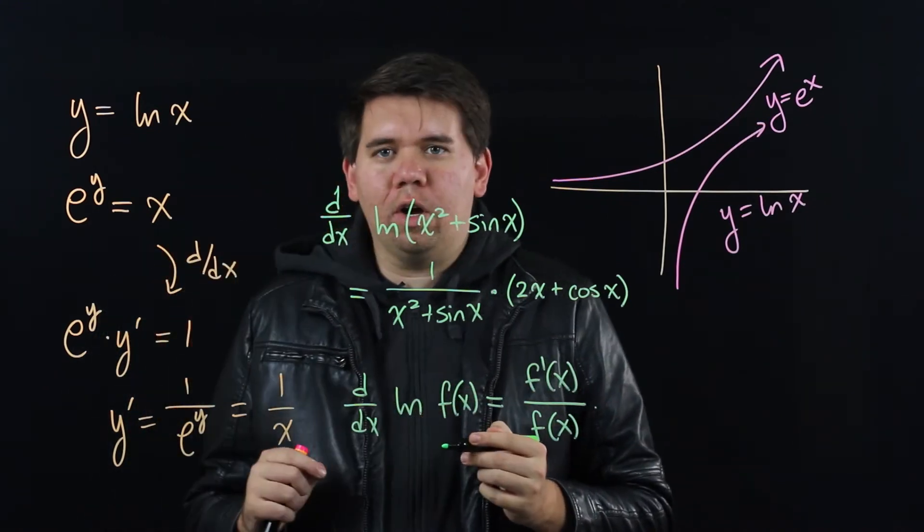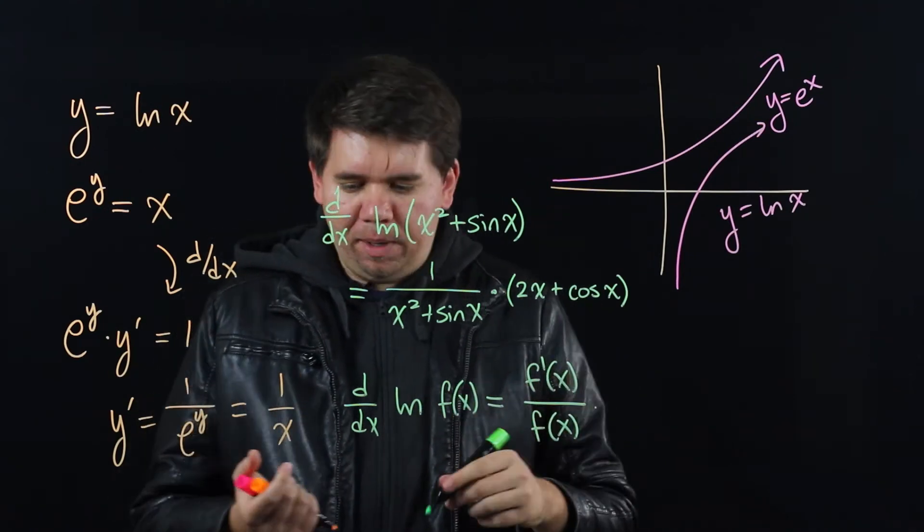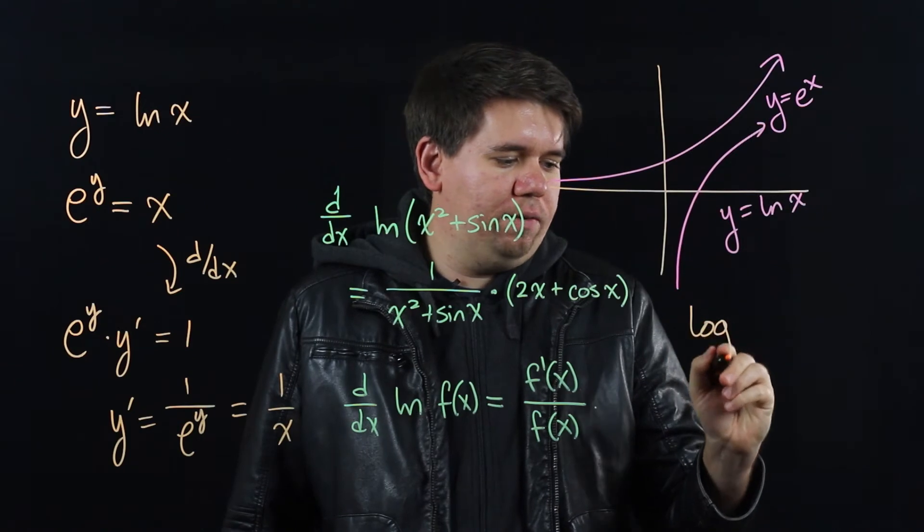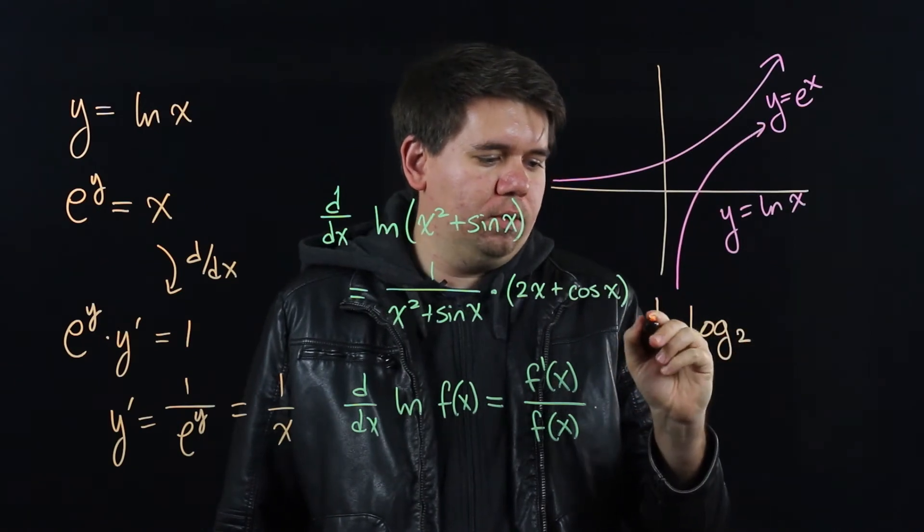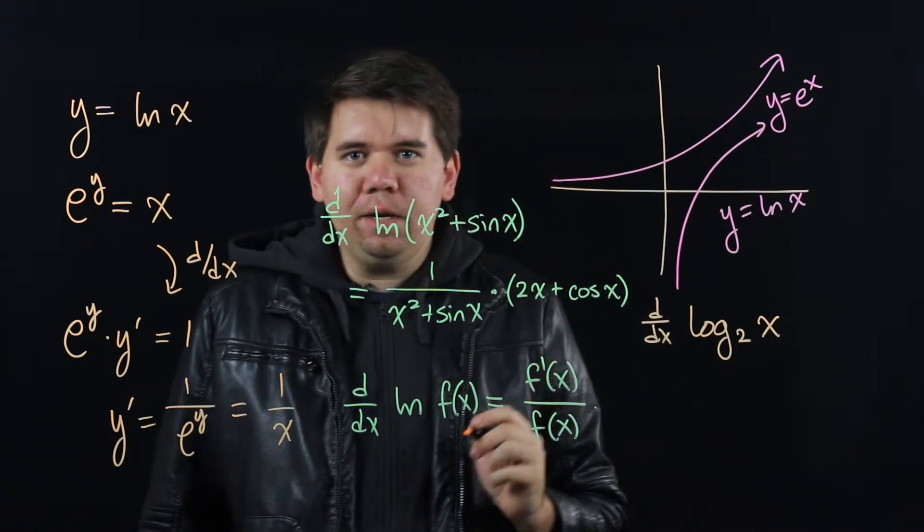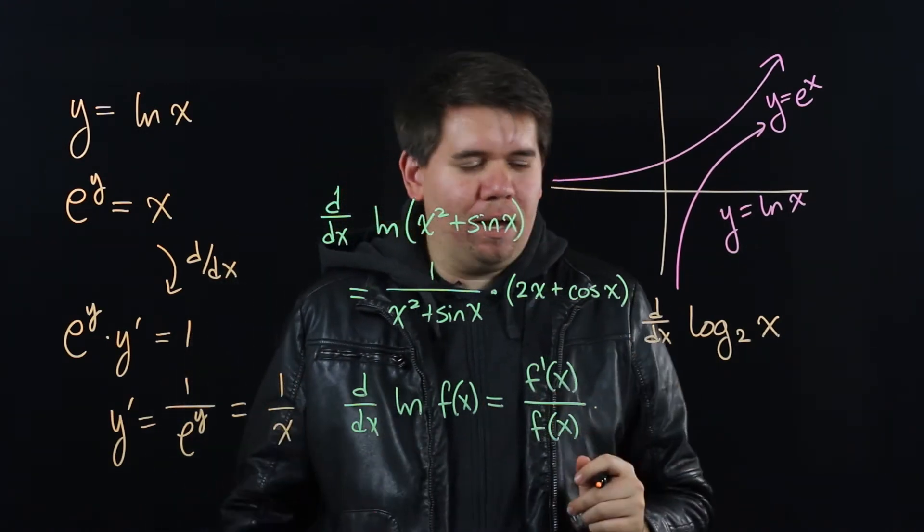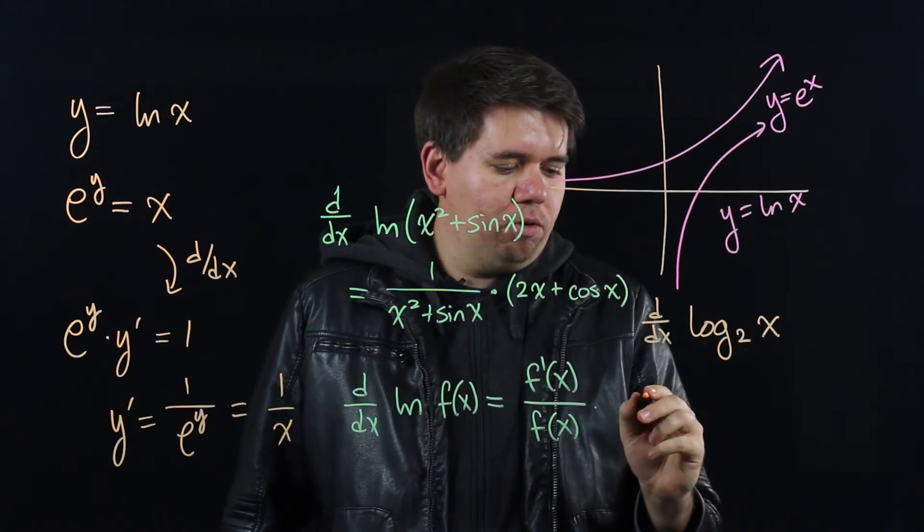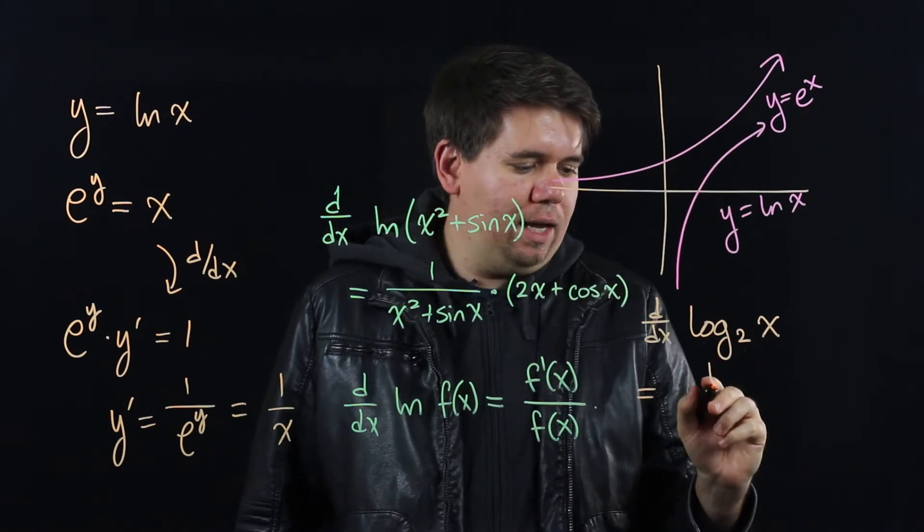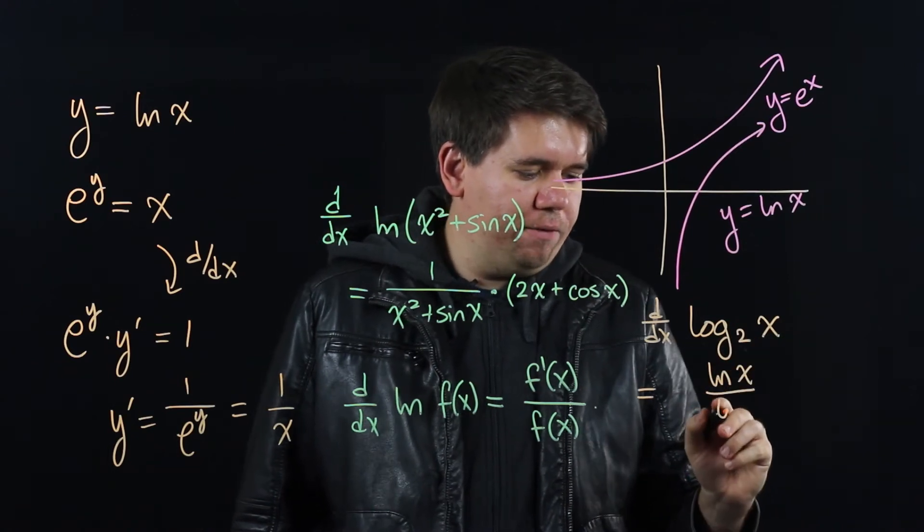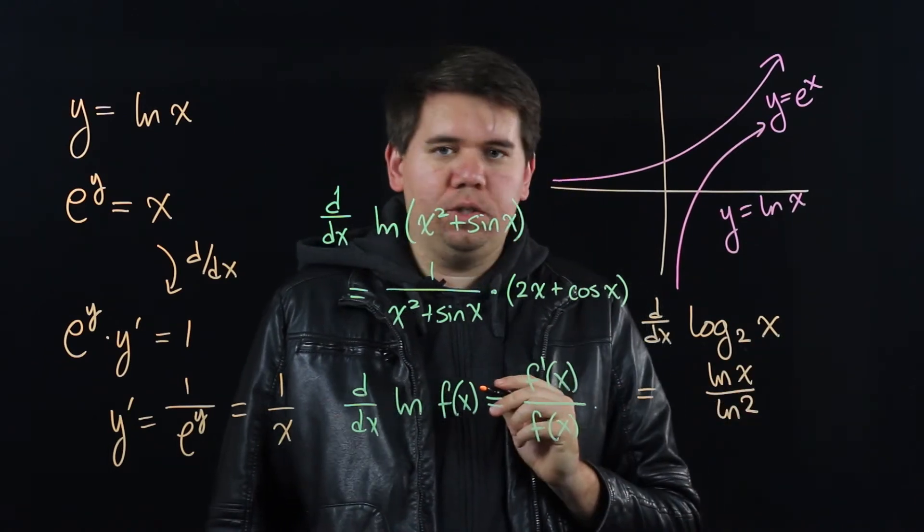What if instead of natural log, you have log of some other base? For example, you might have something like the derivative of log base 2 of x. But here we can use a handy fact about logs. Whenever you have log base something, you can rewrite it as just ln of x divided by ln of whatever your base is, here ln of 2.